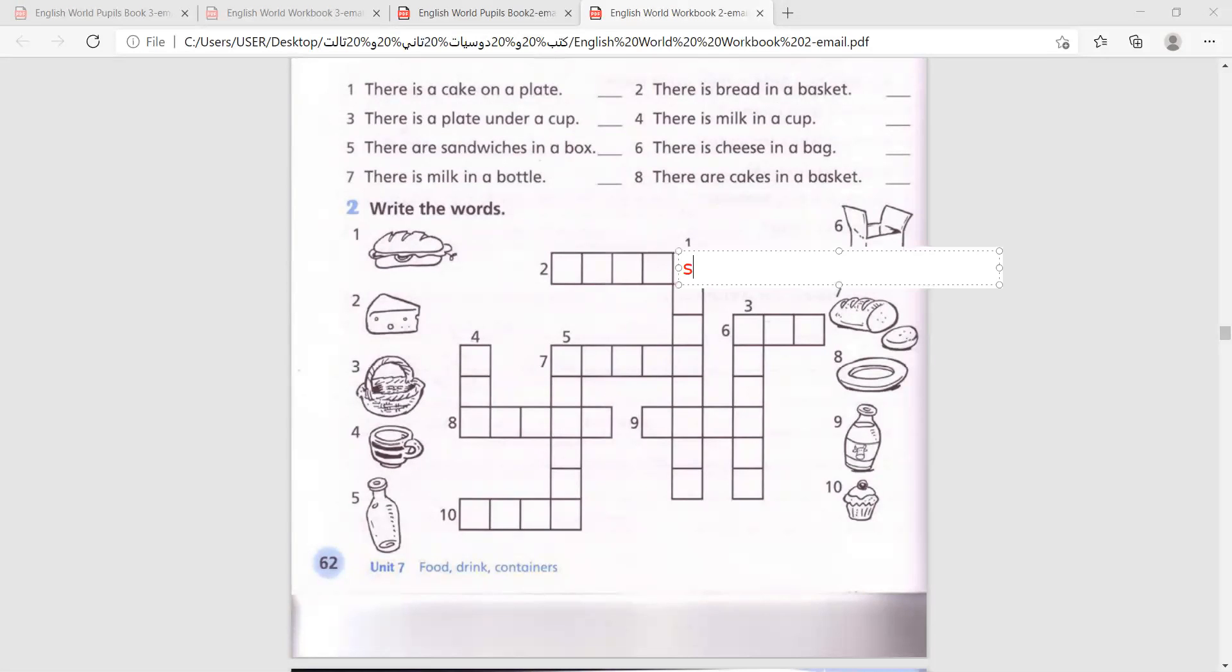It's a sandwich. So all we need to do is write a letter in each box or each square. Sandwich, S-A-N-D-W-I-C-H. Number two, cheese. Like we used to do the same thing, we'll just write one letter in each square. Cheese, C-H-E-E-S-E.